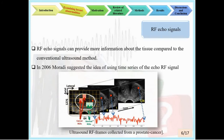Morady et al. suggested the idea of using time series of echo RF signals while keeping the probe and tissue fixed, and using extracted features to diagnose benign and malignant prostate masses. Ultrasound RF time series is a sequence of ultrasound RF frames captured over time from stationary tissue locations, as shown in the figure.